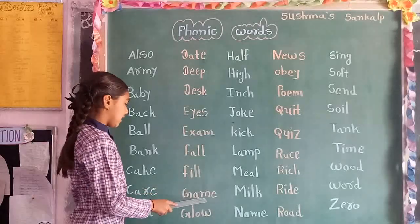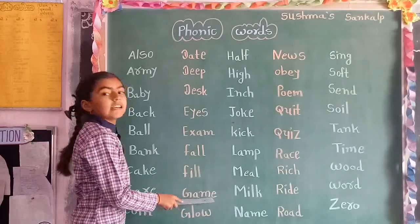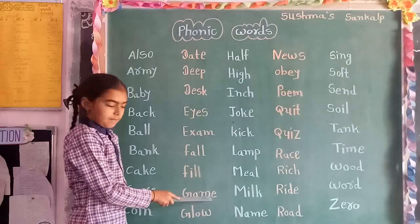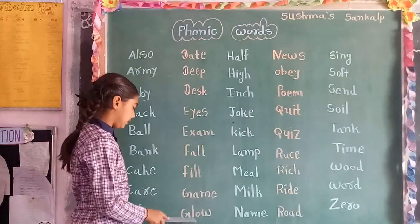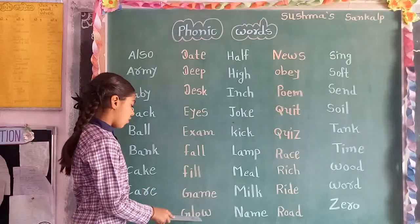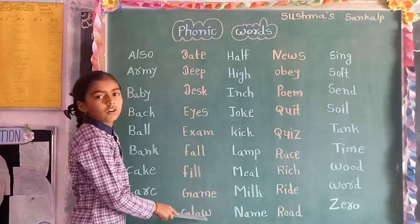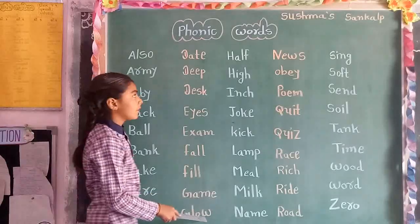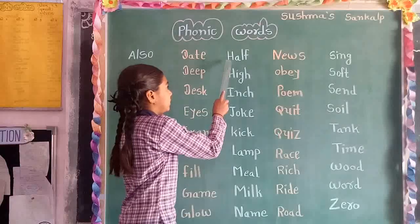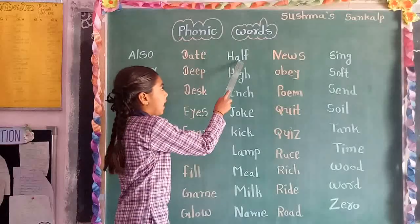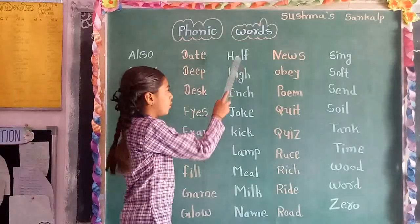G, A, L, E. Dev. G, L, O, W. Globe. H, A, L, F. Half.